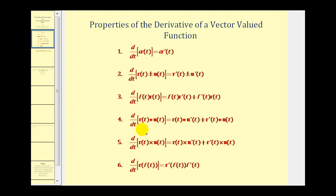Property four is what we're going to prove in this video. It states the derivative of the dot product of two vectors equals the first vector valued function dotted with the derivative of the second, plus the derivative of the first dotted with the second. Property five is similar but for cross products. Property six will remind you of the chain rule. For this video we focus on proving property number four.